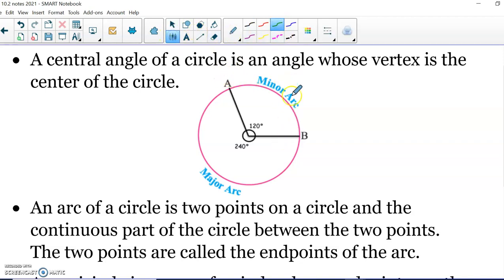The way you name an arc is by its endpoints. So if we were talking about this arc right here, we would call that arc AB. And the symbol for an arc is just an arc above the endpoints.